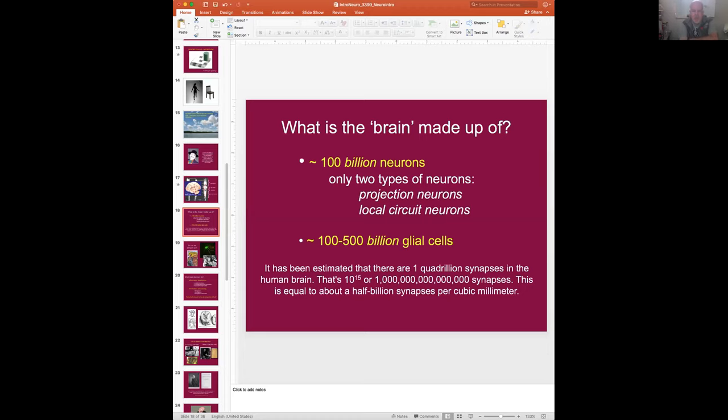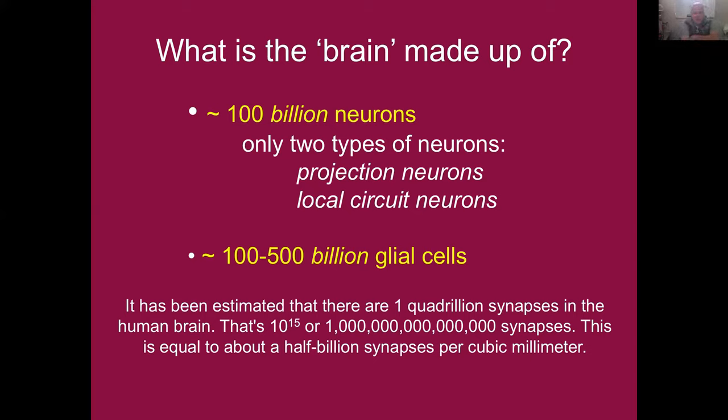Welcome back to part two. I've been trying to split these talks into 20 to 30-minute chunks so it's not too overwhelming and you have time to see them. I'm going to share the screen and then we'll go from here. This is where we ended last time — was the brain made up of neurons, glial cells, and synapses.